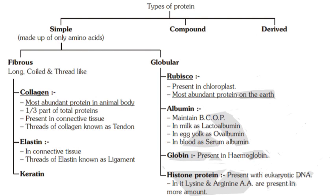Elastin protein is generally present in connective tissue and threads of elastin are known as ligaments. Keratin protein is found in hair. The second type of simple proteins is globular proteins, with examples including rubisco, albumin, globin, and histone proteins.